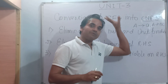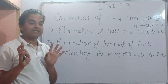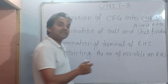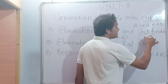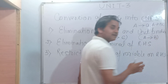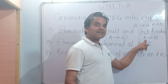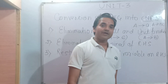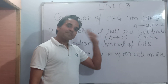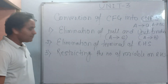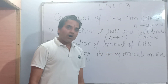If there is a null or unit production, it will be eliminated so that only A → BC type productions remain. The second step is to eliminate terminals on the right-hand side, meaning terminals on the RHS must be replaced. When you have a terminal on the right-hand side mixed with variables, you need to replace it so the production conforms to CNF.